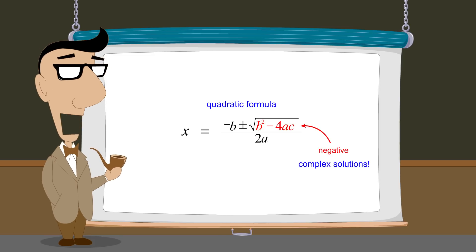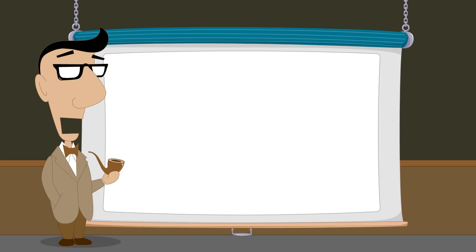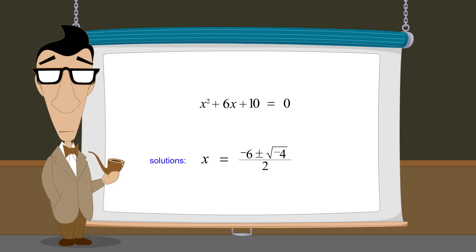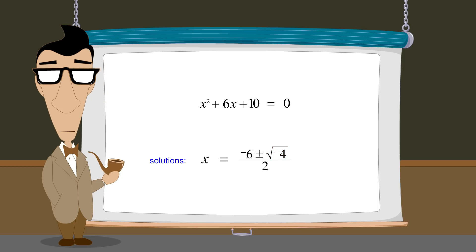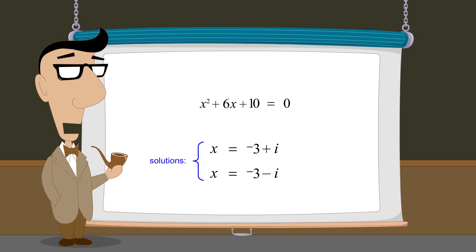For instance, in the previous lecture when we used the quadratic formula to solve the equation x-squared plus 6x plus 10 equals zero, it produced the result negative 6 plus or minus the square root of negative 4 over 2. Since no real number can be the square root of negative 4, there are no real solutions for this equation. On the other hand, we saw that if complex numbers are included in our number system then we get two complex solutions: negative 3 plus i and negative 3 minus i.